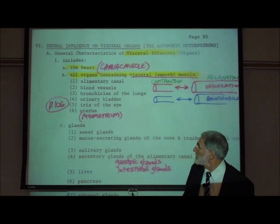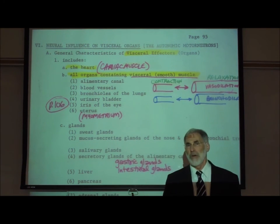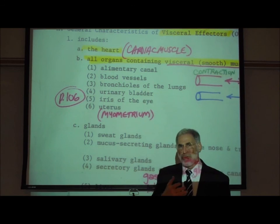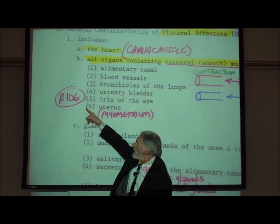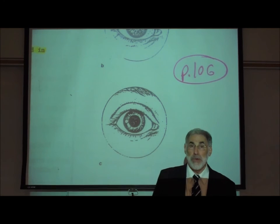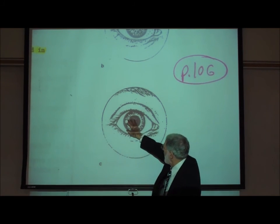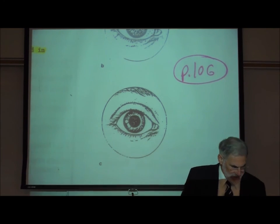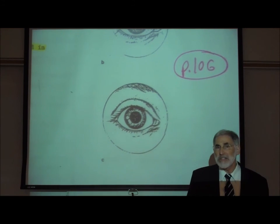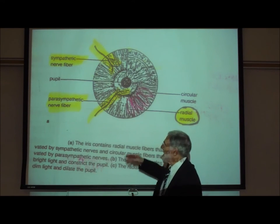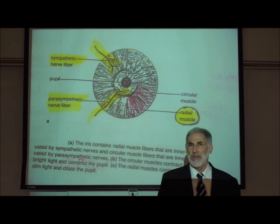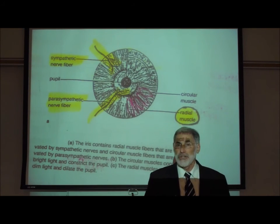Visceral smooth muscle is also found in the wall of the urinary bladder and can lead to emptying of the bladder. There is also muscle innervated by autonomic motor neurons in the iris of the eye. Looking at page 106, this dark spot in the center of the eye is the pupil — an opening through which rays of light pass — and the pigmented muscle around it is the iris. In the iris, there is both circular muscle and radial muscle innervated by autonomic motor neurons, and contraction or relaxation of that muscle leads to corresponding pupillary dilation or pupillary constriction.